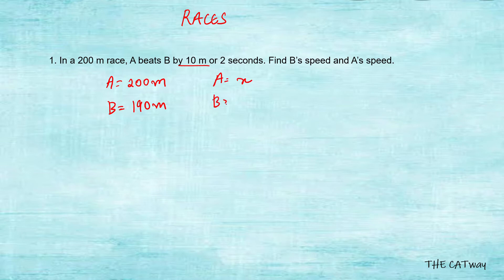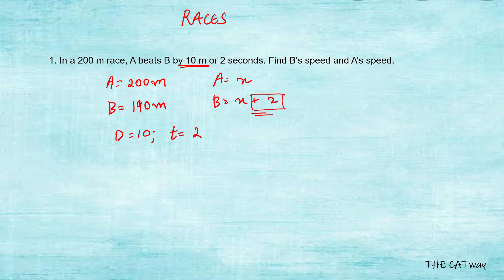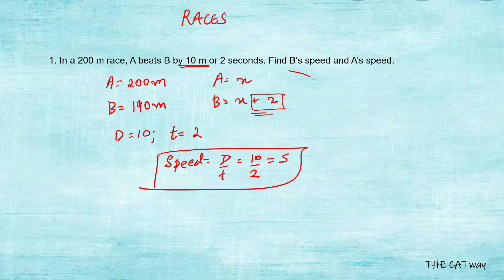A completed the race in x seconds whereas B completed the race in x plus 2 seconds. B covered the remaining 10 meters in those 2 seconds. So the speed of B is distance upon time, which is 10 divided by 2, that is 5 meters per second. Using this speed of B, we can calculate how much time B took to complete the race: 200 divided by 5 equals 40 seconds.